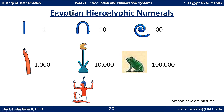A single staff is a group of one. A heel bone is ten singles, so that's ten in our numbers. A scroll is ten heel bones, or a hundred individual items. A finger is ten scrolls, which is a thousand. A lotus flower is ten thousand, or ten fingers. Ten lotus flowers would be a pollywog or tadpole, representing a hundred thousand. And the astonished man represents one million, which would be ten pollywogs.